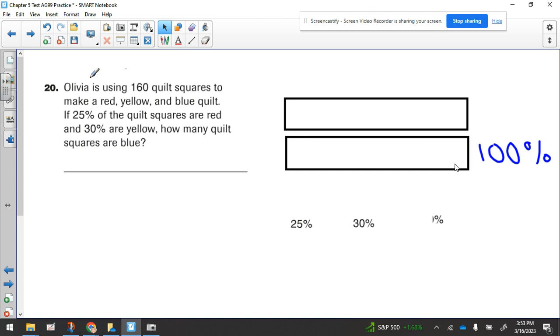All right, so we've been talking a lot about using tape diagrams in class, and if we use a tape diagram to solve this question, I think that'll be a good idea. So the bottom bar is going to be talking about percent, and the top one will be talking about the number of quilt squares.